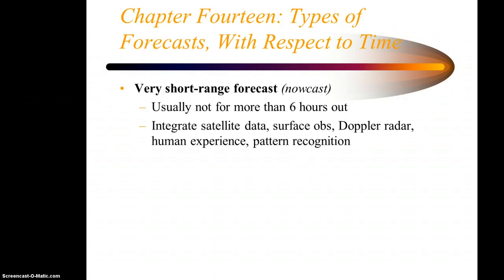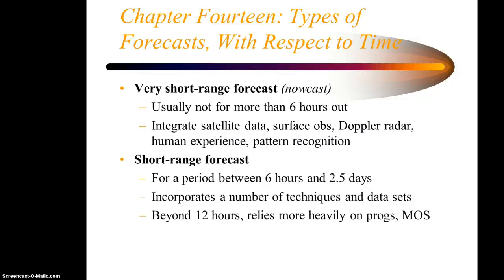Now let's talk about forecasts with respect to time frame — how far out do you go in time? A very short-range forecast is often called a now-cast, usually not for more than six hours out. It integrates satellite data, surface weather observations at airports, Doppler radar, human experience, and pattern recognition. A short-range forecast goes out from six hours to two and a half days. It incorporates a number of techniques and data sets, and beyond 12 hours relies more heavily on those prognostic charts, or progs, and the model output statistics — the MOS data.